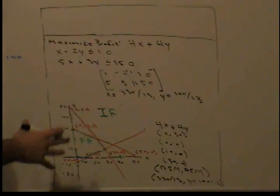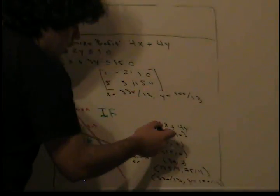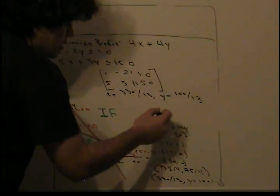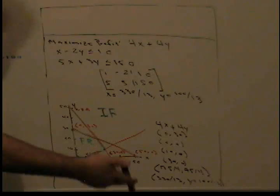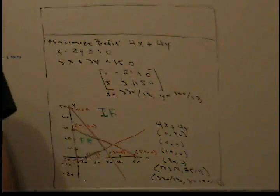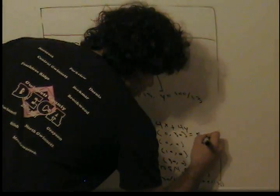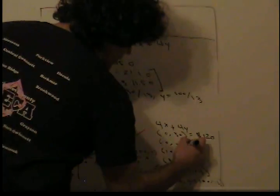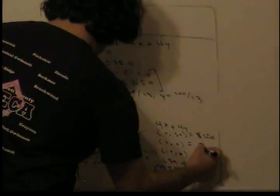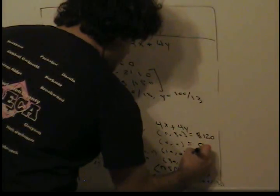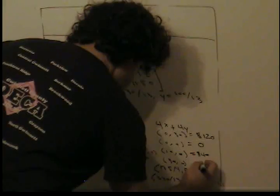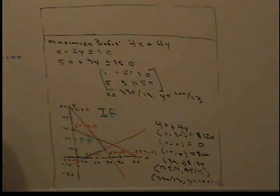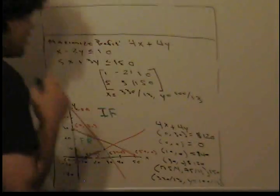Now we have all our corner points. All we have to do is plug in the x and y values from each corner point into our profit equation and see which yields the highest value — that's our maximum profit and optimal solution. Plugging in (0, 30) gives $120. Plugging in (0, 0) gives $0. Plugging in (10, 0) gives $40. Plugging in (30, 0) gives $120. Plugging in (75/4, 75/4) gives $150. And finally, plugging in (330/13, 100/13) gives $130.